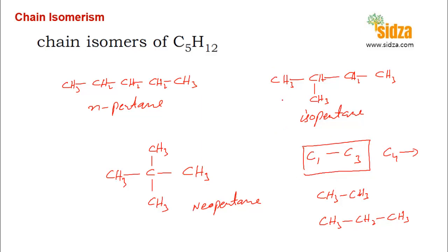As we discussed, for the C4 molecule there are two chain isomers, and for the C5 molecule we have drawn three chain isomers. For six, seven carbons, and so on, as the number of carbon atoms increases, the number of chain isomers will also increase. However, there is no particular formula by which you can calculate the number of chain isomers in a molecule.